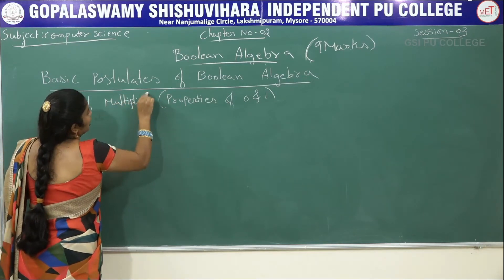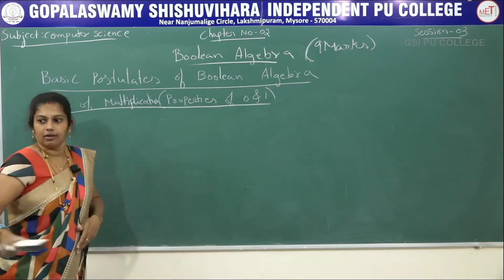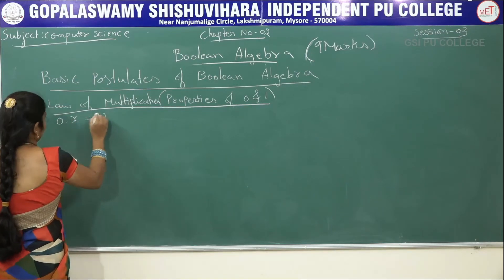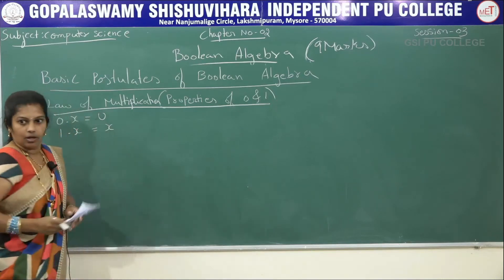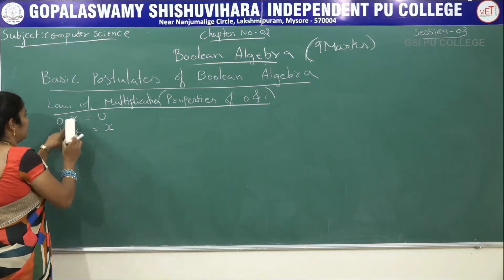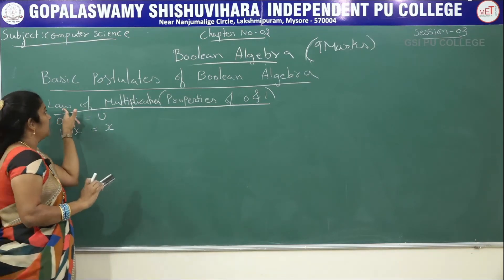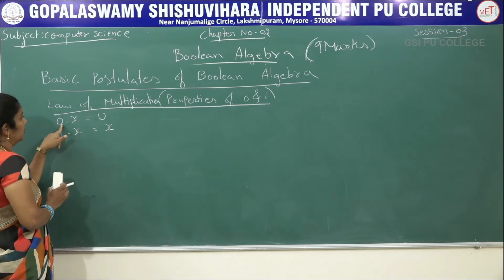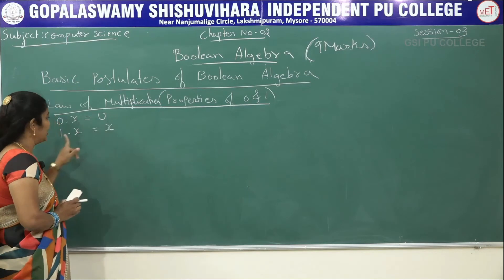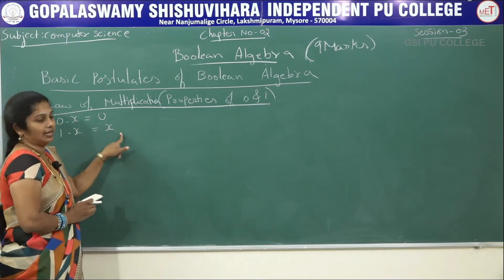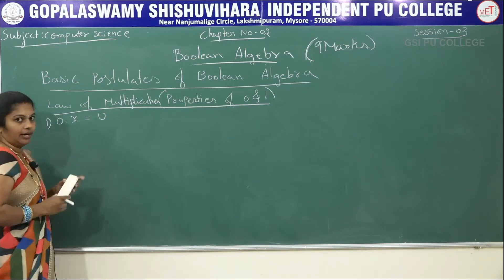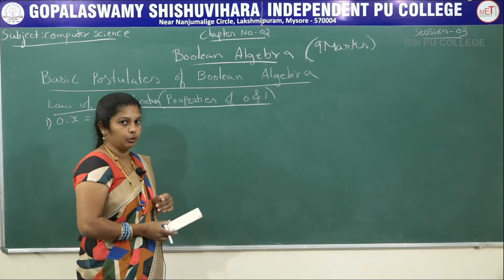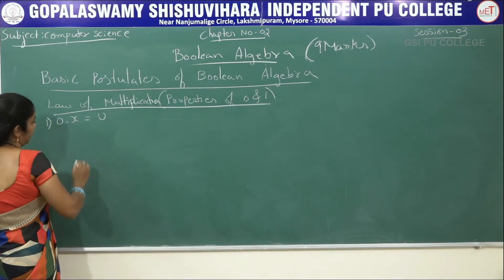Next, we explain the law of multiplication, especially for properties of zeros and ones. There are also two properties here. The first one is: 0 · x = 0. The second one is: 1 · x = x. Whereas law of addition uses the plus operator, law of multiplication uses the dot operator. In the exam, they may ask you to explain law of multiplication — the properties of zeros and ones.